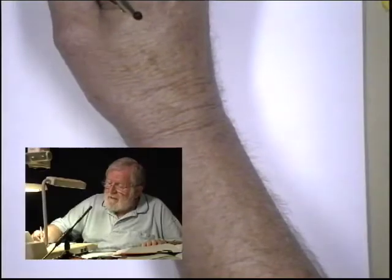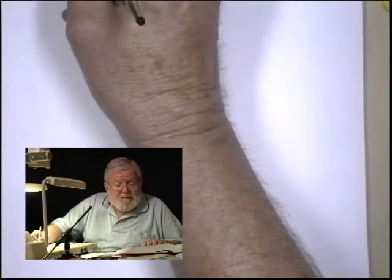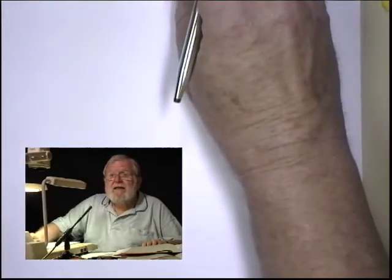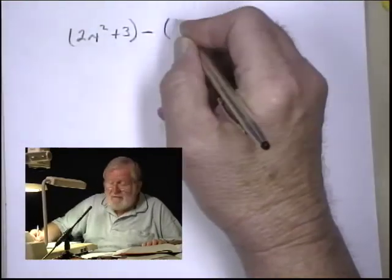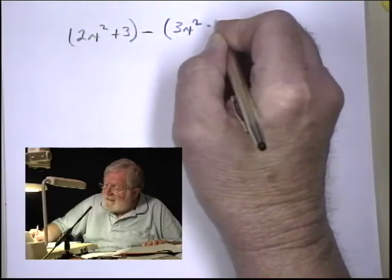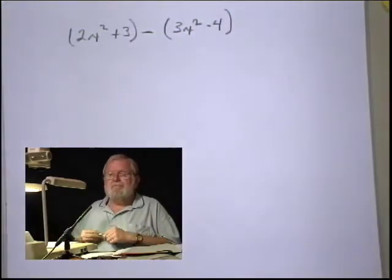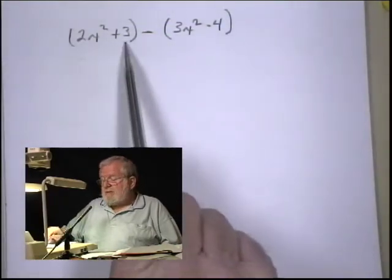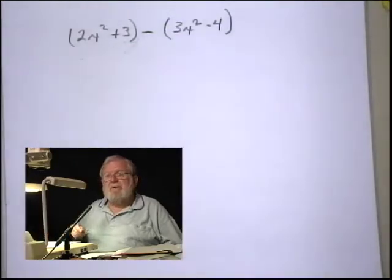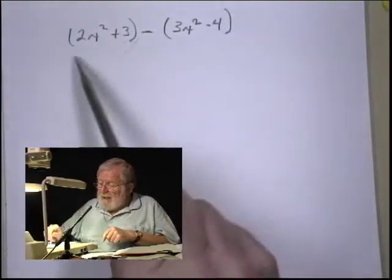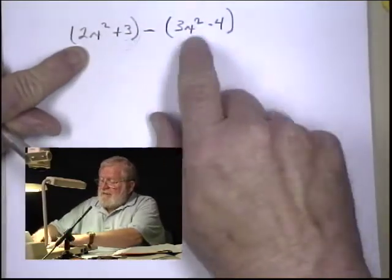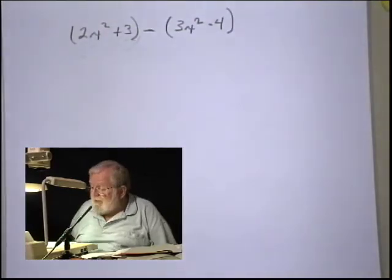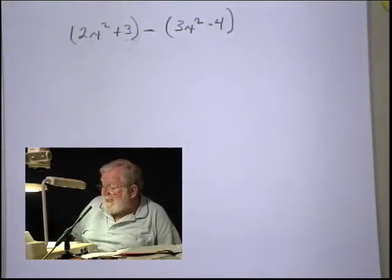We'll use (2x² + 3) minus (3x² - 4). So we have two polynomials. These are called binomials because there are two terms in each of the brackets or parentheses, and each polynomial has two terms. They have two terms, so these are called binomials.